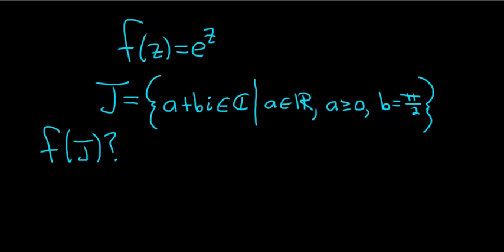Hey, what's up? In this problem, we have f of z equal to e to the z, and we have a set J. And we have to find f of J, so that's the image of J under f.